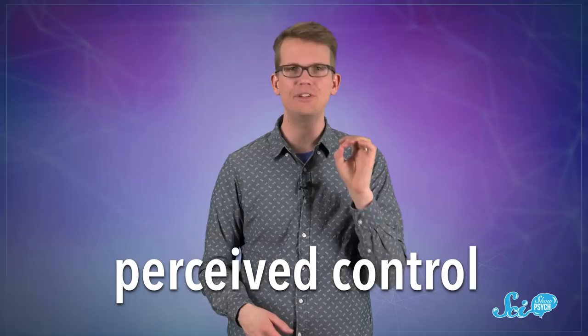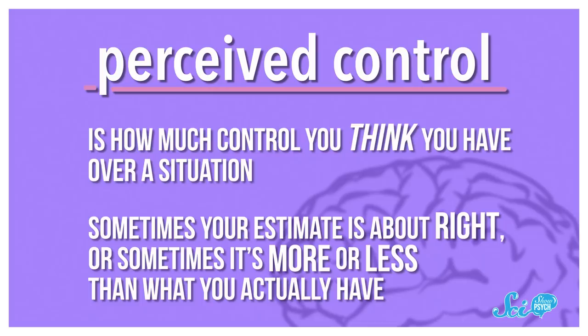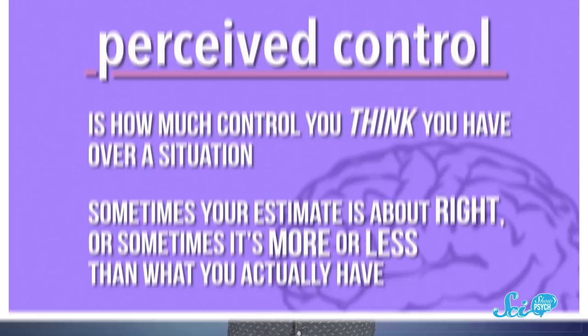It comes down to something psychologists call perceived control. Perceived control is how much control you think you have over a situation. Sometimes your estimate is about right, or sometimes it's more or less than what you actually have. But in general, studies suggest that thinking you have some control in life is a really big deal for physical and mental health.